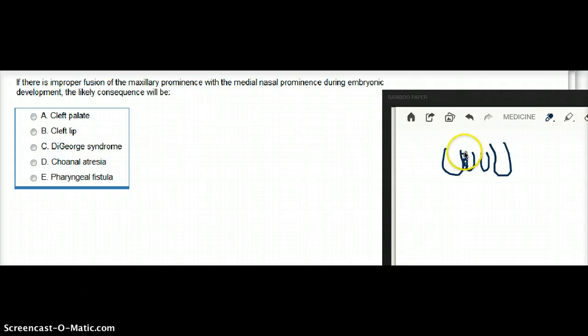because when this maxillary prominence combines with the nasal prominences, that's how we have the philtrum. We have the formation of the proper lip when these prominences combine, and they form the philtrum of the lip.